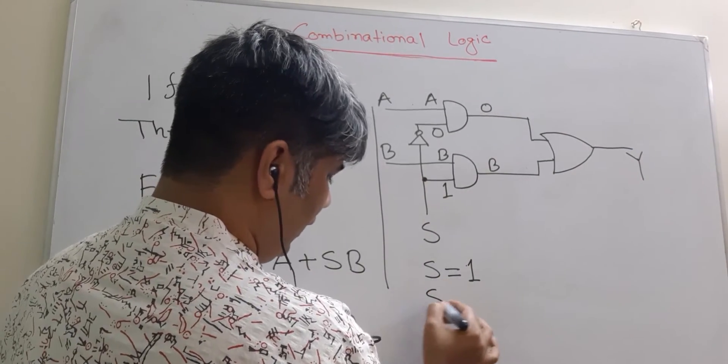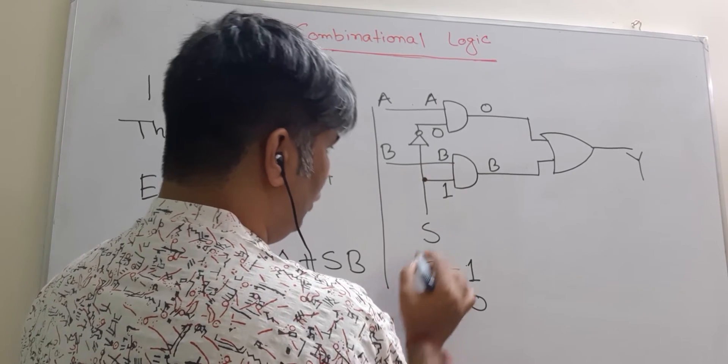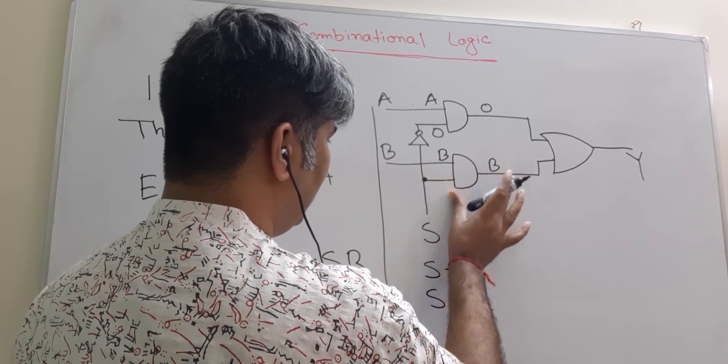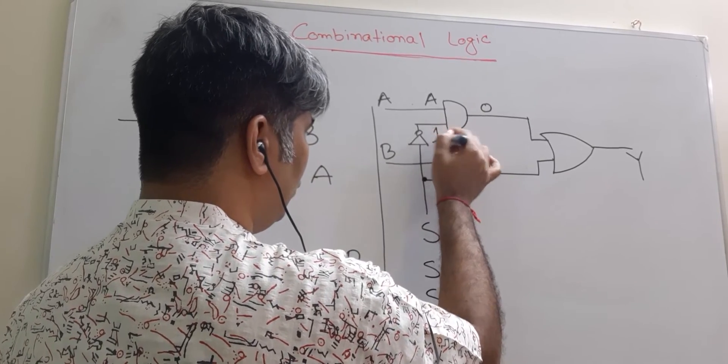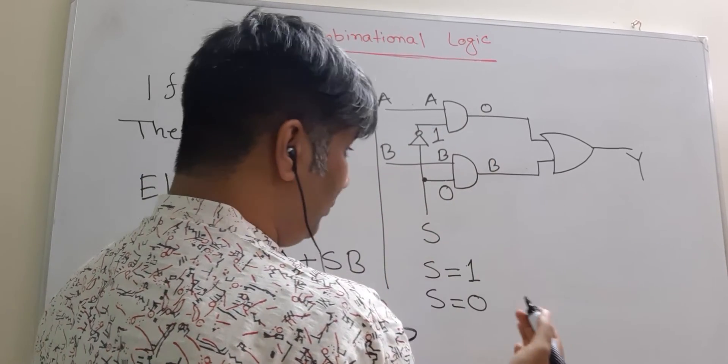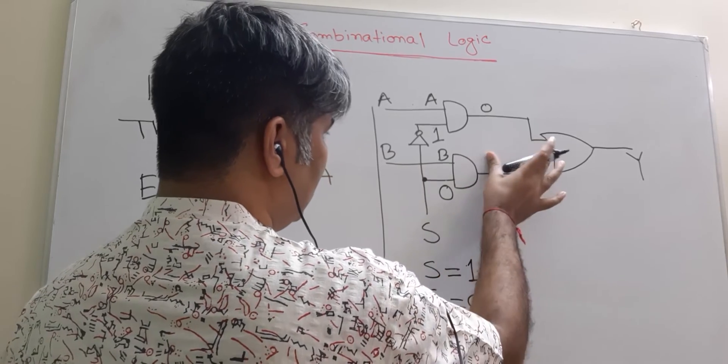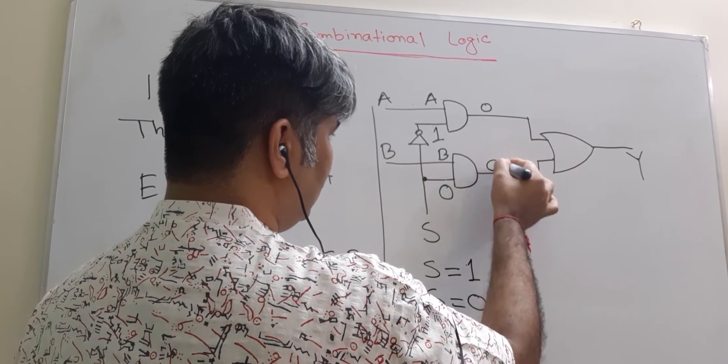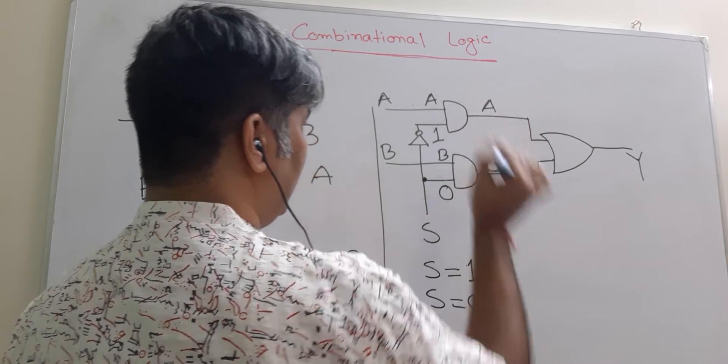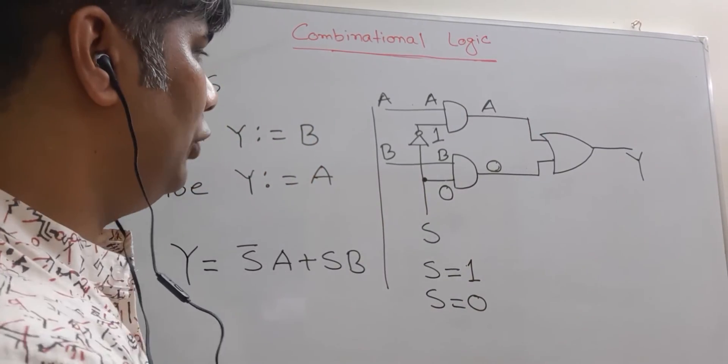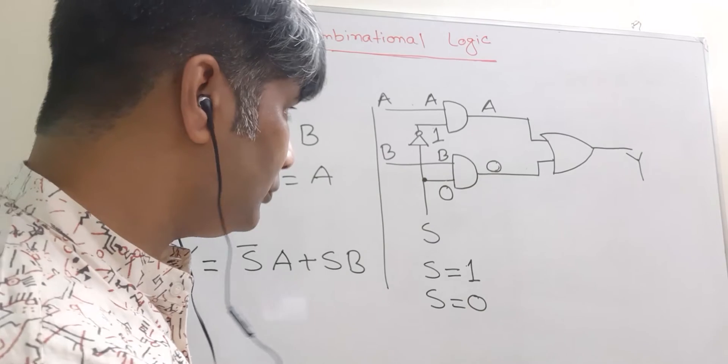When A is equal to zero, then you will have a zero here and you will have a one here. So if you have that, that means you will have a zero here and you will have an A here, which means the output will be A.